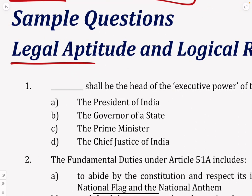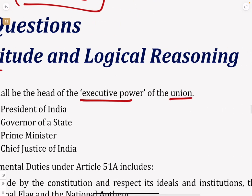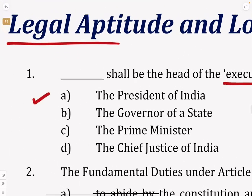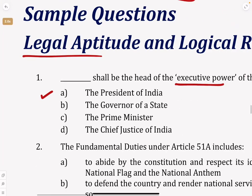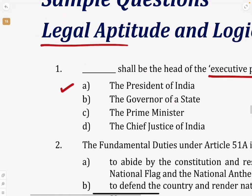The first question here is: Dash shall be the head of the executive power of the union. So who is the executive power? It is the President of India. The President of India is the executive power of the union of India — that is, for the whole country, who is the executive power. Now why is it the President?